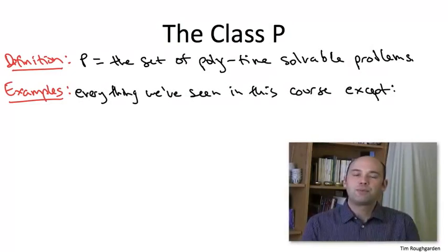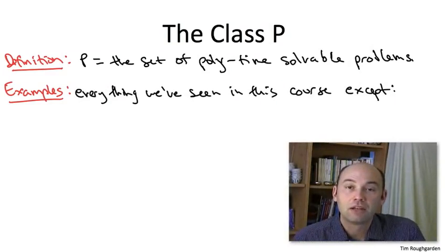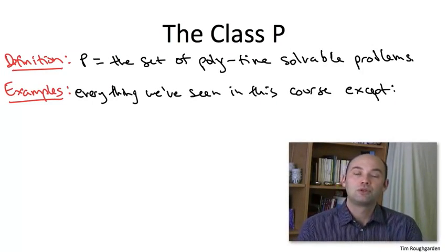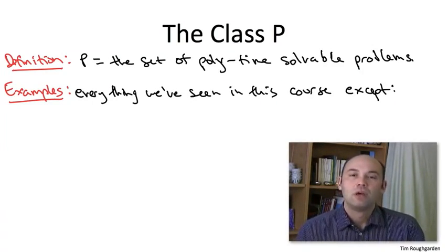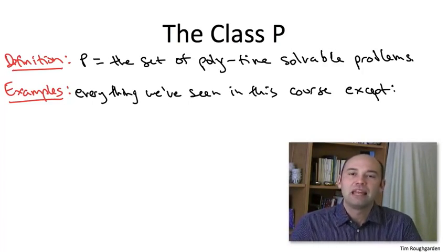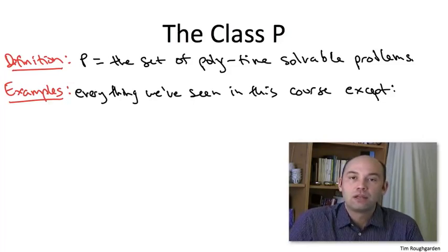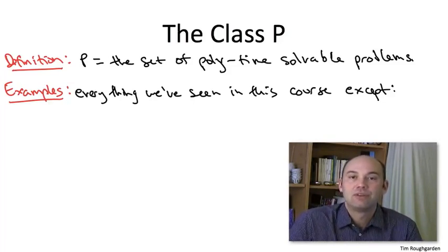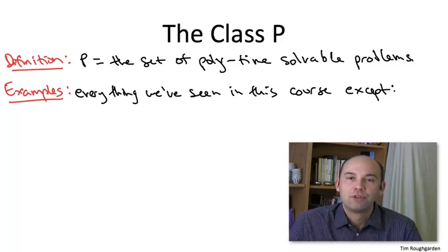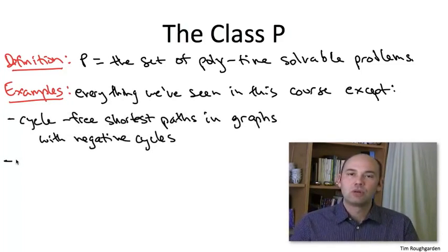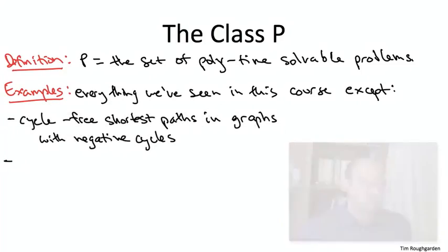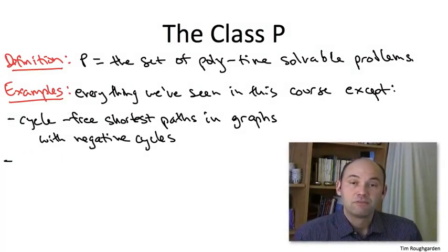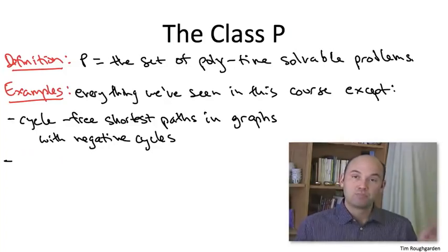There are two exceptions. One, we talked about explicitly at the time, which is when we discussed shortest paths in graphs with negative edge costs. And we stated that if you have negative cost cycles, and you wanted shortest paths that are simple, that do not have any cycles in them, then that turns out to be an NP-complete problem. For those of you that know about reductions, it's an easy reduction from the Hamiltonian path problem. So we did not give a polynomial time algorithm for that version of the shortest path problem. We just punted on it.